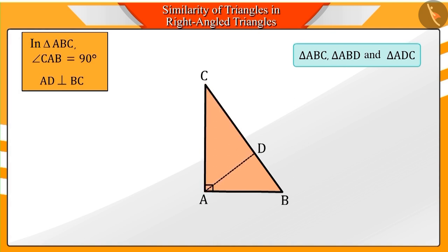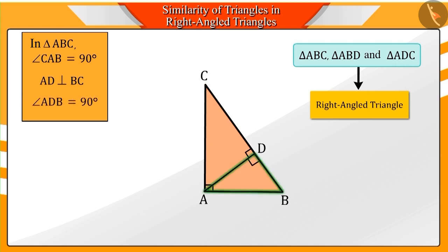We can see that all of these three triangles are right-angled triangles. Can you tell why? Because AD is perpendicular to the side BC, and we know that perpendiculars intersect at 90 degrees, which is why Triangle ABD and Triangle ADC are also right-angled.